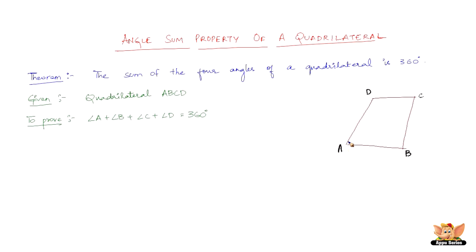First of all, it is very clear that a quadrilateral has got four sides and it has also got four angles. Now what is given is a quadrilateral ABCD and what is to be proved is that angle A plus angle B plus angle C plus angle D equals 360 degrees.